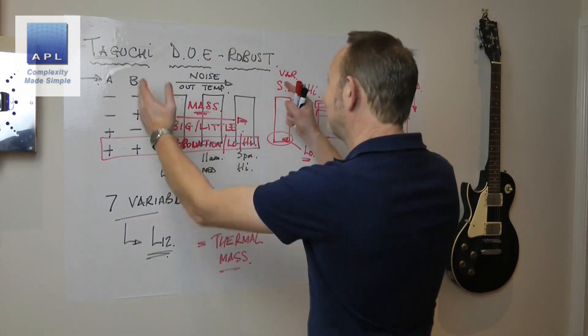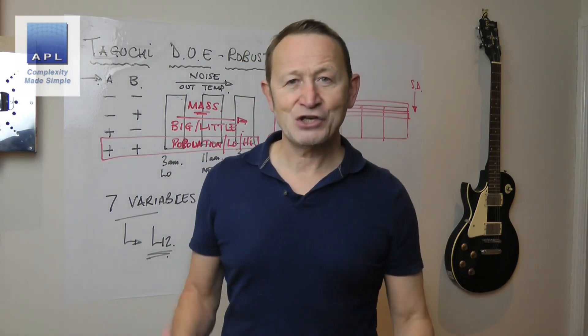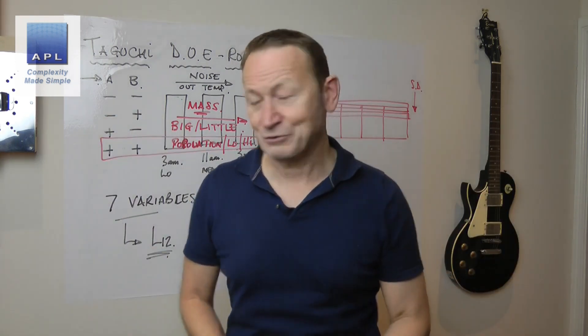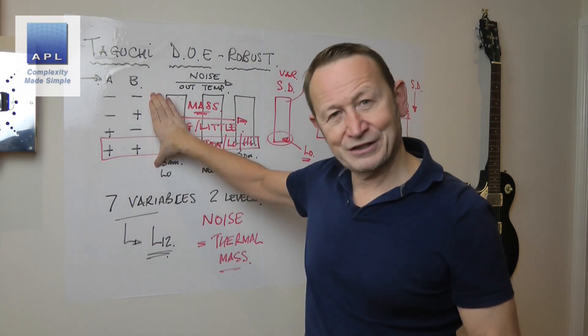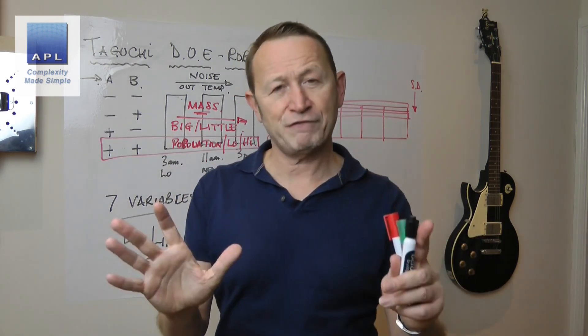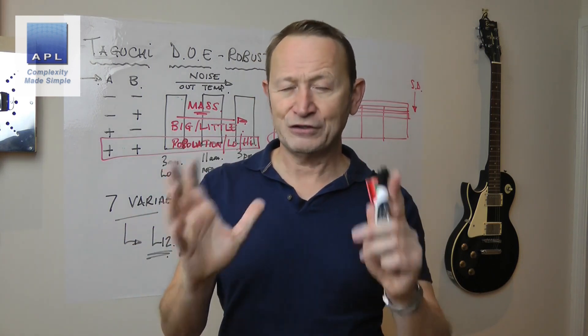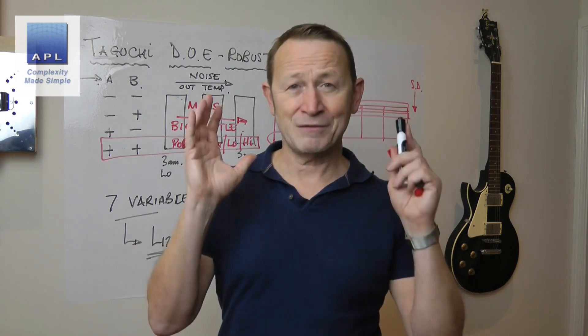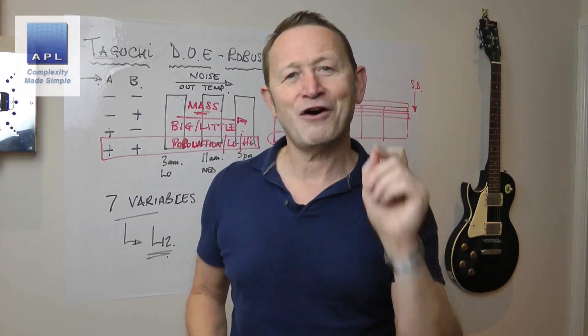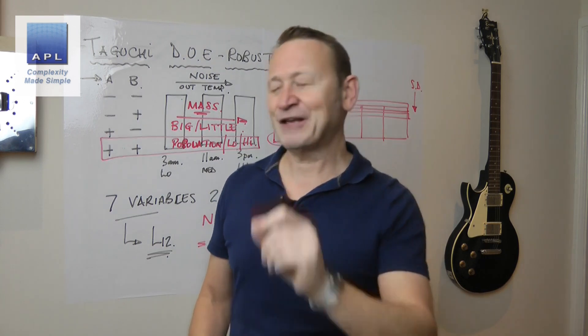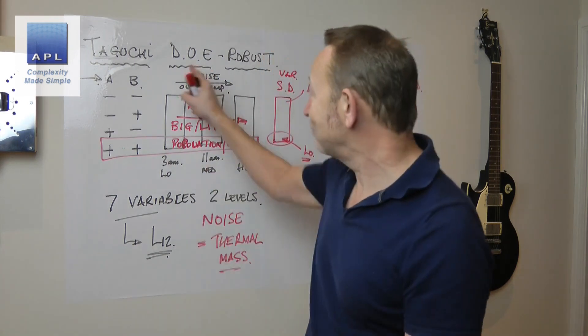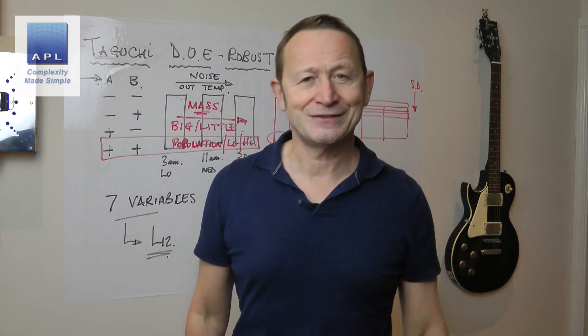Now that is a Taguchi robust DOE. So when engineers say to you, I can't get rid of this variability. There is nothing I can do. If you know the right mathematical technique, and this isn't even difficult to do. Taguchi designs are very simple. This analysis was just a graphical analysis only. If you know the right techniques to do, you can find out the most fantastic things about your processes. By the way, you can find out things that your competition will never know. And then you can smash the competition out of the water and you can make bucket loads of cash. Because that's what Taguchi robust DOEs do.